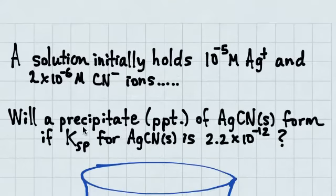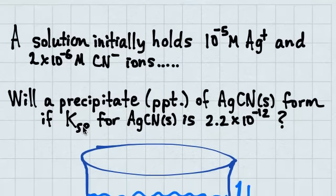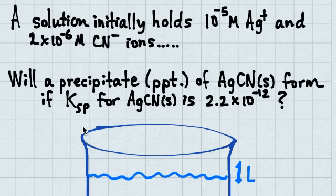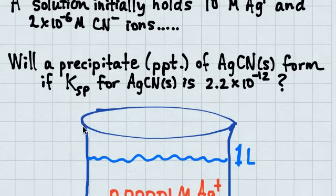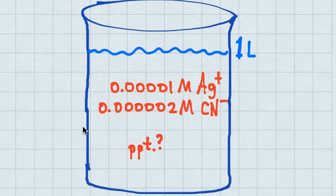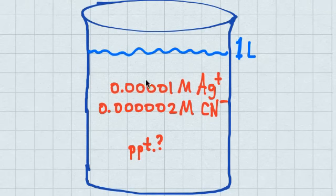Here's a cartoon that tries to reflect that. A solution initially holds a small amount of silver and an even smaller amount of cyanide ion. Will a precipitate form if my KSP for silver cyanide is 2.2 × 10⁻¹²? The cartoon shows one liter of water in a beaker, 0.00001 molar silver, and 0.00002 molar cyanide. Those are such small amounts, so I can't imagine I would see anything precipitating.